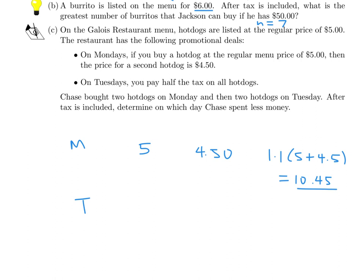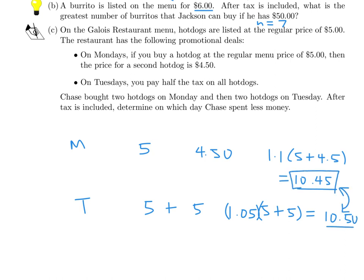On Tuesday, he pays regular price — $5 and $5. But with half the tax, so instead of 1.1, it's 1.05 because it's 5%, not 10% this time. This calculates to $10.50. Comparing the two, Monday is the cheaper one — he spent less money on Monday.